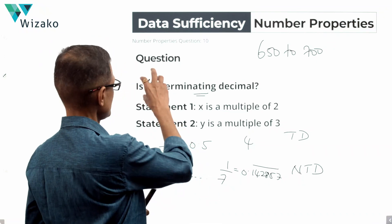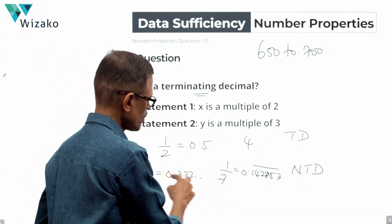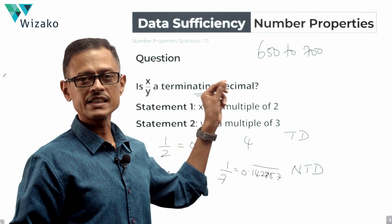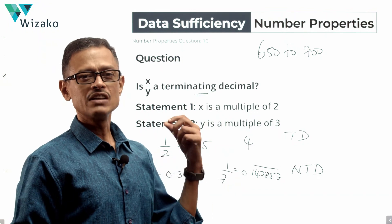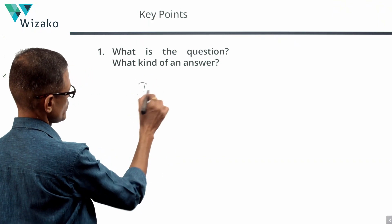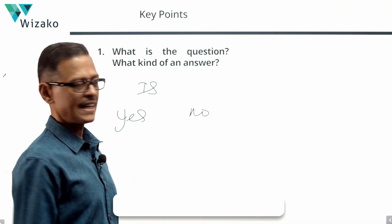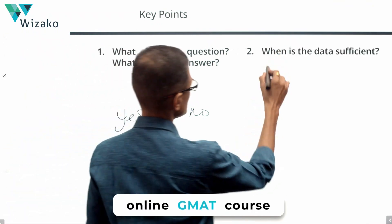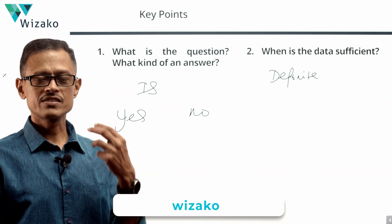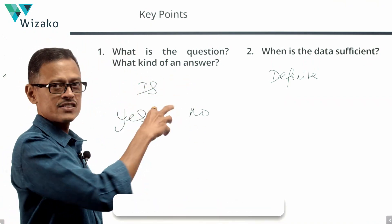The question is asking: is the fraction x upon y a terminating decimal or a non-terminating decimal? That is what we need to determine. We should figure out whether the given information in the two statements will help us arrive at this answer — analyzing the statements independently or together.